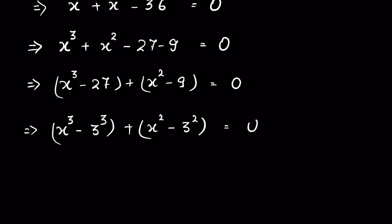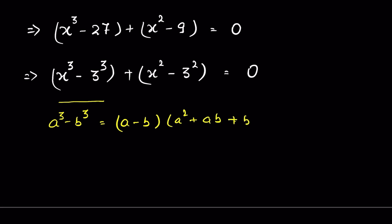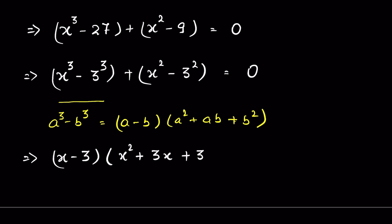The expression x³ - 3³ is in the form a³ - b³, which expands as (a - b)(a² + ab + b²). So we write this as (x - 3)(x² + 3x + 9).